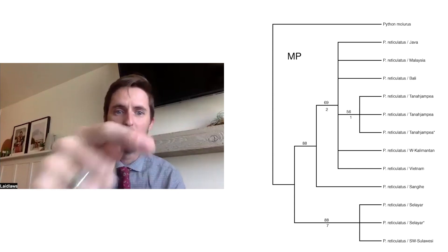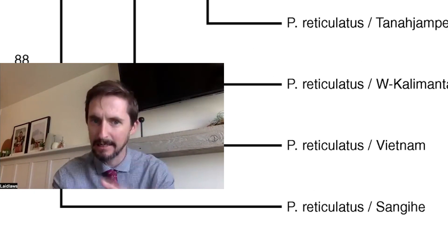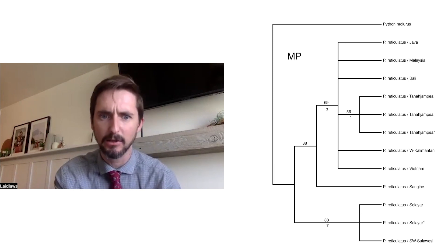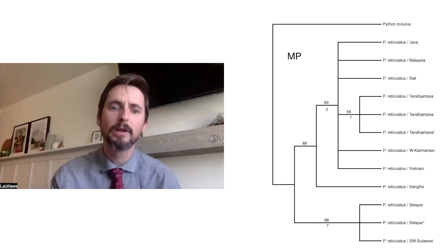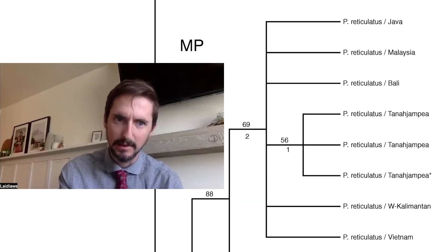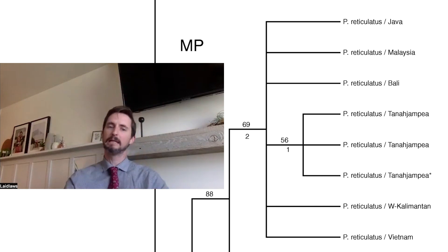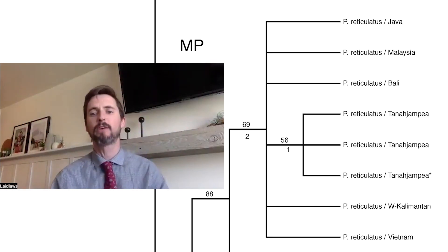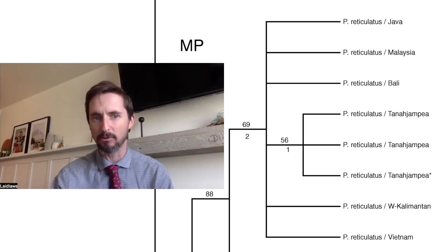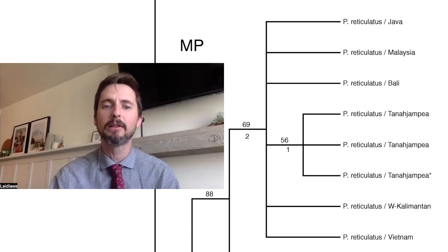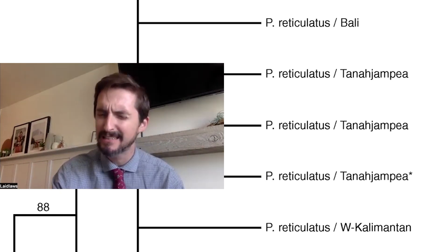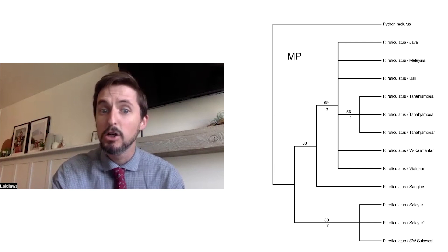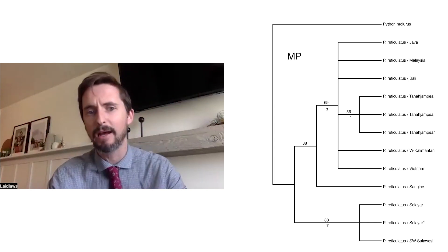What you've got is one, two, three, four, five, six, seven, eight samples from six different populations — three from Tana Jumpea — and we don't know which one of those is the next most distantly related; it could be any of those six. The paper is saying we don't have enough information to tease that out. The only thing they can tell you about the remaining three is the three Tana Jumpeas are more closely related to each other than to the other five. And it seems to me that the paper makes an argument that Tana Jumpea should be its own subspecies, but I see nothing in this phylogeny that would support that at all.